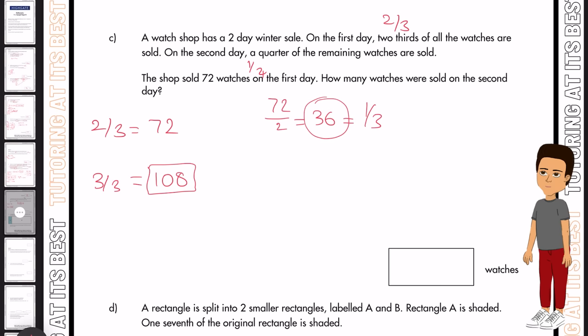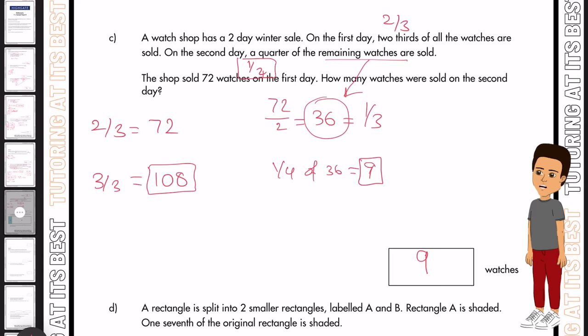But only two thirds were sold, which was 72. And if we have 108 minus 72, we obviously have 36 left over. So on the second day, a quarter of the remaining was sold. So a quarter of 36 equals nine. So how many watches were sold on the second day? We have nine watches as that is a quarter of the remaining watches, which was 36.